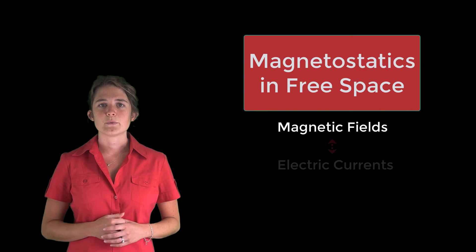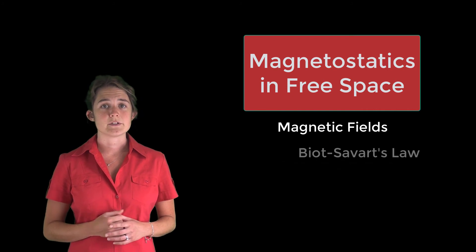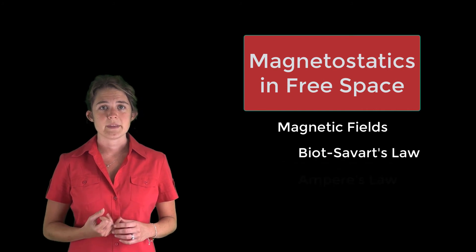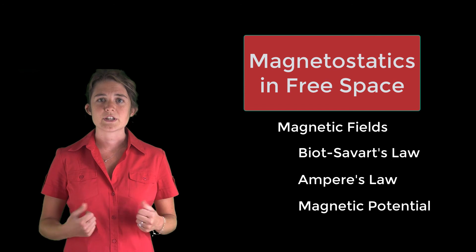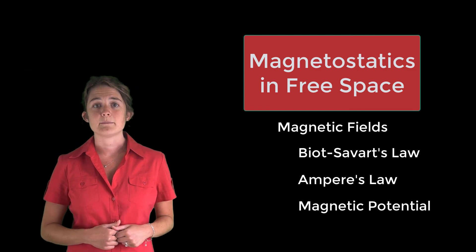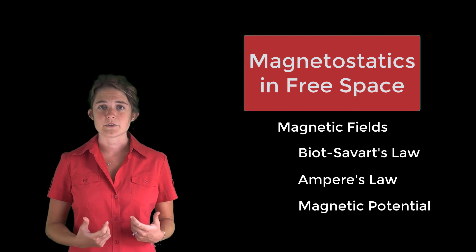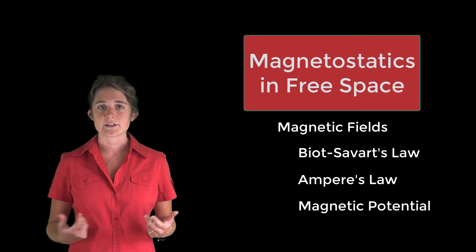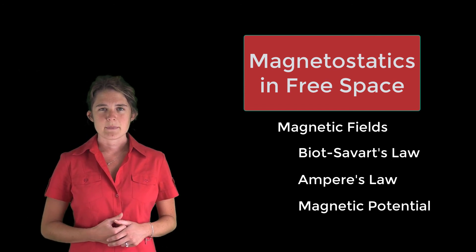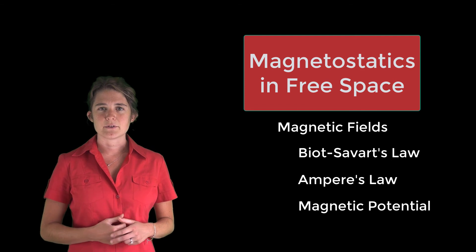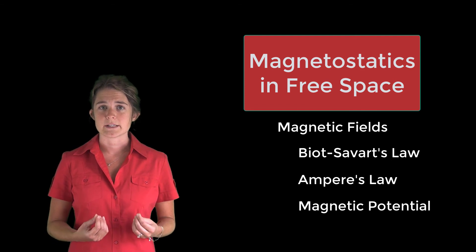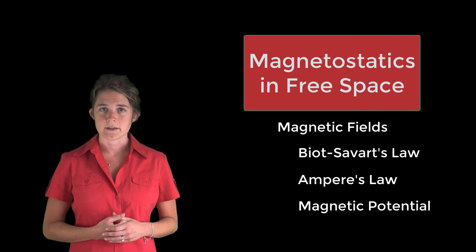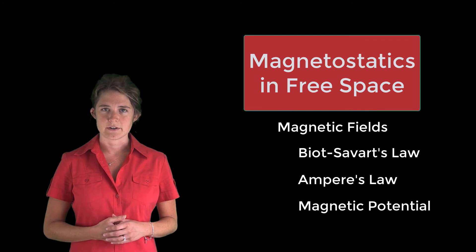In this module we will talk about Biot-Savart law, Ampere's law, and magnetic potential, which allow us to calculate magnetic fields resulting from various current distributions. By the end of this module you should have a grasp of the basic properties of the time-invariant magnetic field and its relationship to electric currents.